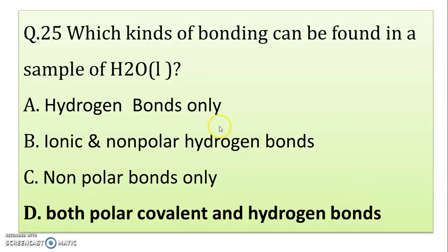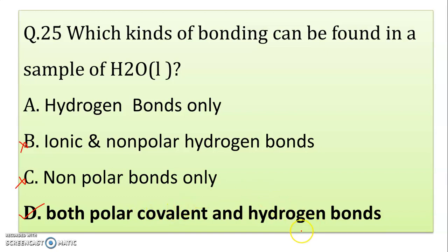Next question: which kind of bonding can be found in a sample of liquid H2O? Only hydrogen bond? No. Ionic? No — water is a covalent molecule. Non-polar bonds only? No, water is polar. The correct answer is both polar covalent and hydrogen bonds are present in a sample of H2O.